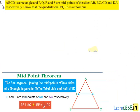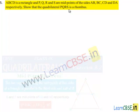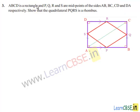Moving on to the third question: given that ABCD is a rectangle and P, Q, R, and S are midpoints of sides AB, BC, CD, and DA respectively, show that quadrilateral PQRS is a rhombus.